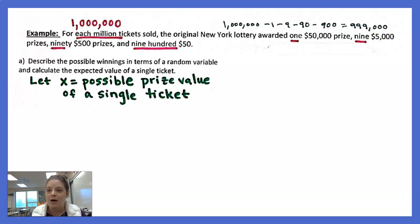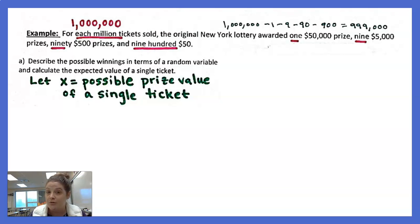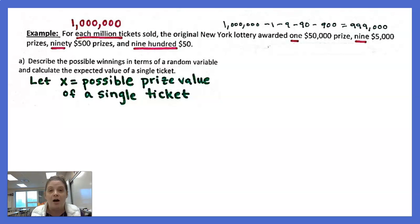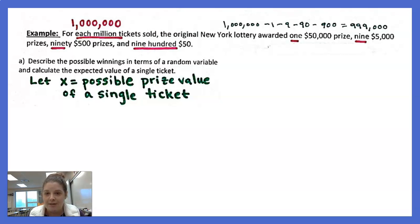I want to describe the possible winnings in terms of a random variable and calculate the expected value of a single ticket. Remember, a random variable is a numerical variable that can be the result of chance. So if we say let X equal the possible prize value of a single ticket, that should work. The prize value is a numerical variable and it is the result of chance.